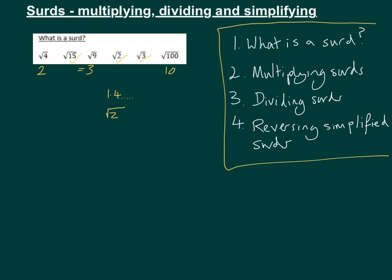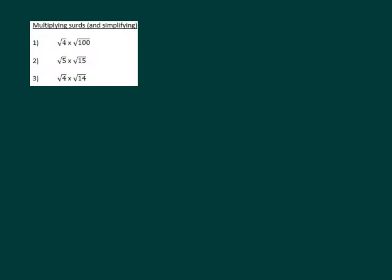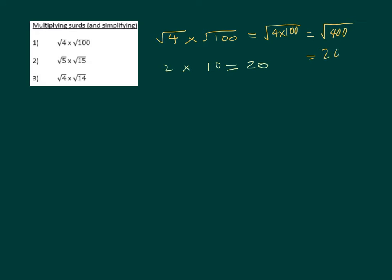We're now going to look at how we multiply surds together. Here we have three examples. The first one doesn't actually contain surds, but it gives us the concept. When you have root 4 times root 100, if we simplify those that's 2 times 10, which gives 20. Using the surd method: root 4 times root 100 gives us root 400, and the square root of 400 is 20. So the method is: multiply the two numbers together and then simplify if possible.